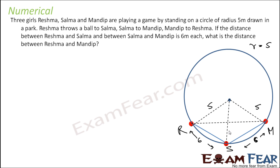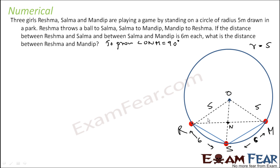If we can somehow prove that this angle is 90 degrees, then we can find this distance using Pythagoras theorem. Let's give this point the name N. First, we need to prove that angle ONM is 90 degrees. The key insight is that both chords RS and SM are of length 6.